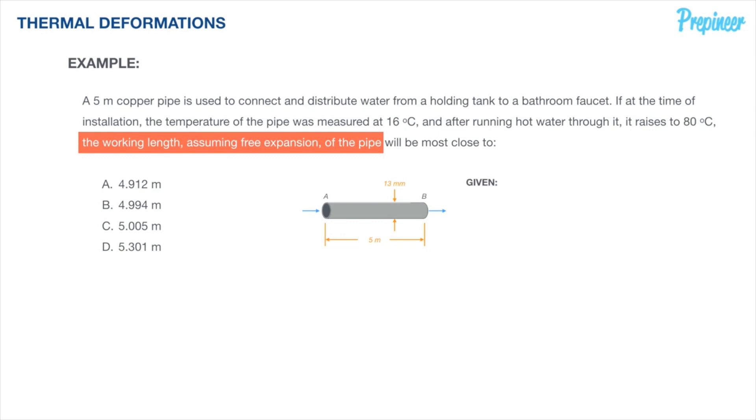Let's scratch out what we are given. We know that the length of our copper pipe is 5 meters originally. We know that the original temperature at the time of installation is 16 degrees Celsius. We know that the material is going to raise to a temperature of 80 degrees Celsius. We know that from the illustration or the diagram that the diameter is 13 millimeters.